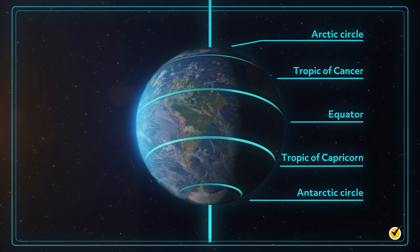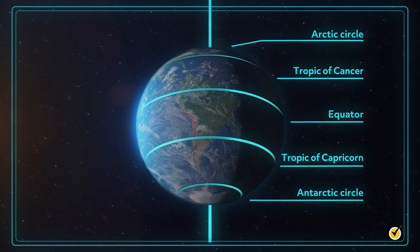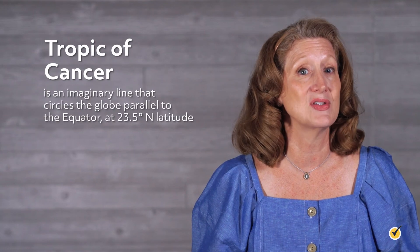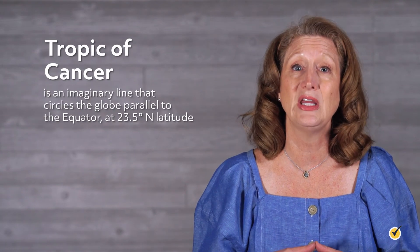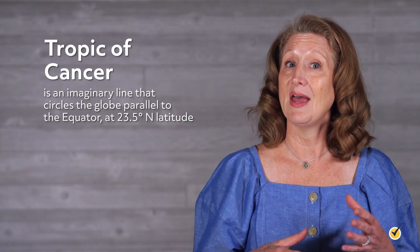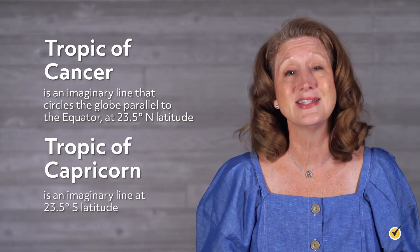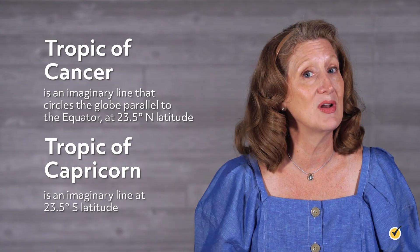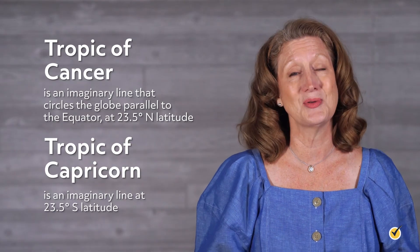The Tropic of Cancer is an imaginary line that circles the globe parallel to the equator at 23.5 degrees north latitude. And the Tropic of Capricorn is an imaginary line at 23.5 degrees south latitude. Okay, now that we know where these tropics are, we know that the Earth rotates around a tilted axis, and we know that it orbits around the Sun. Let's put all these together.